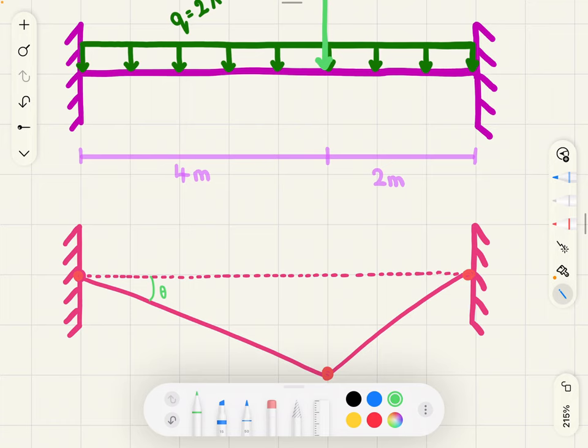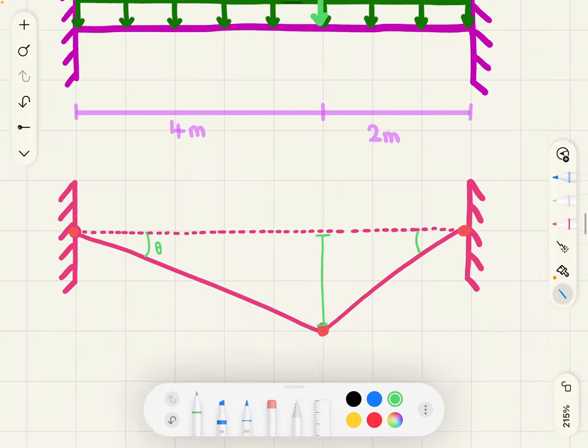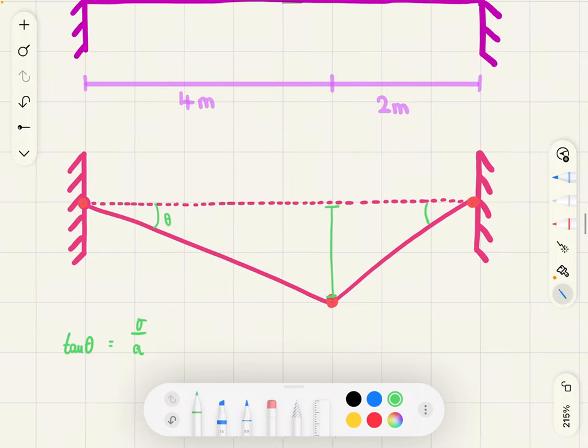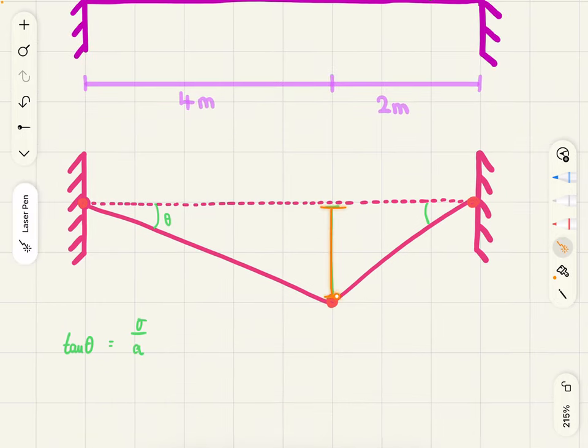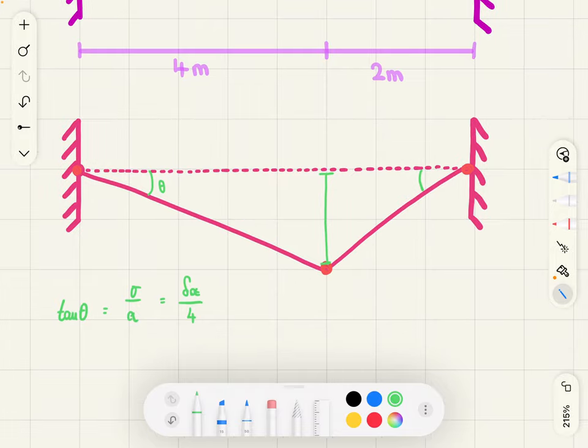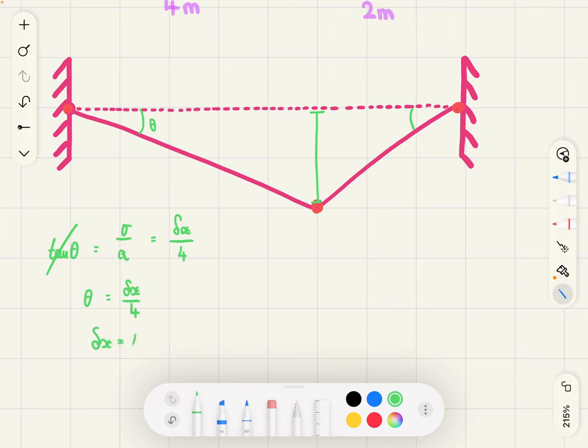So, tan theta equals opposite over adjacent. We know that the opposite side is this, which we're going to call dx. And the adjacent side is 4, so dx over 4. We also are going to use small angle approximations, assuming theta is very small. So, get rid of tan and we're left with theta is dx over 4. Rearrange in terms of dx, we get 4 theta. So, this length is 4 theta.